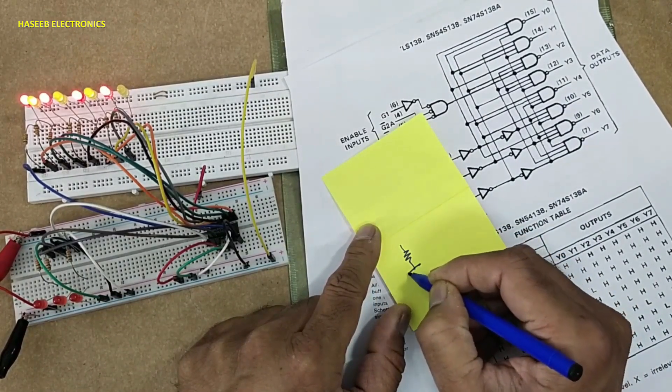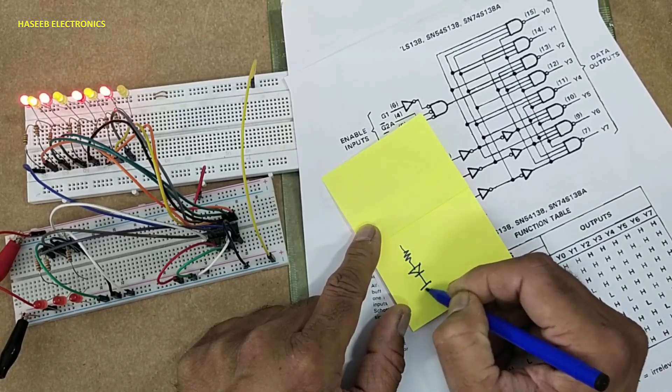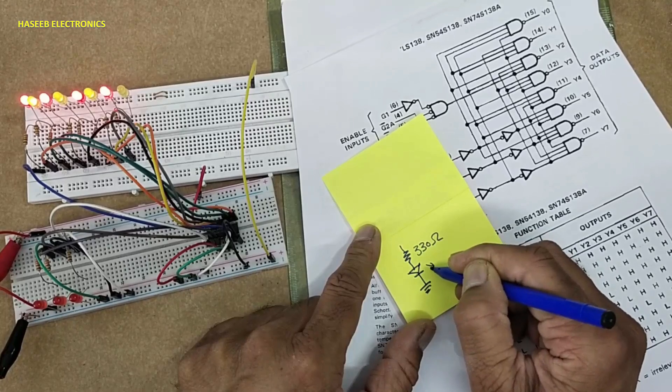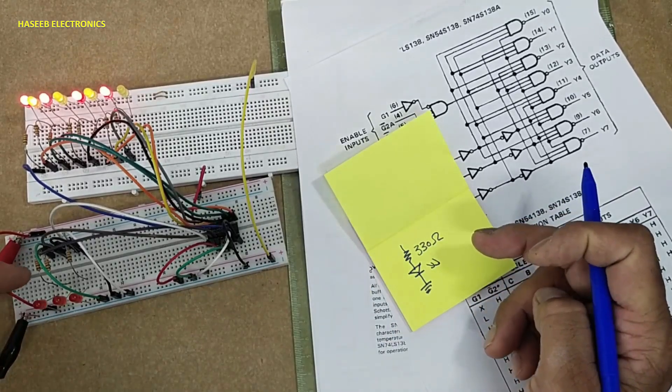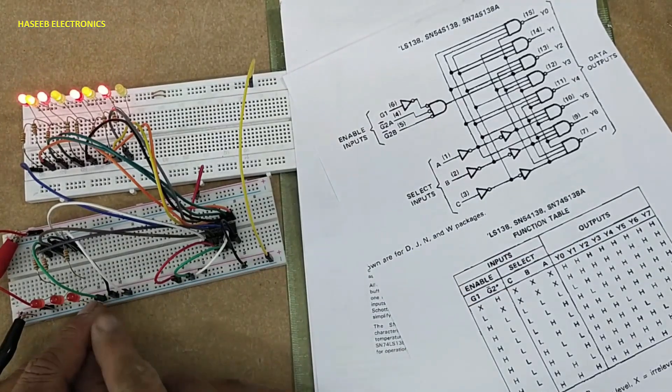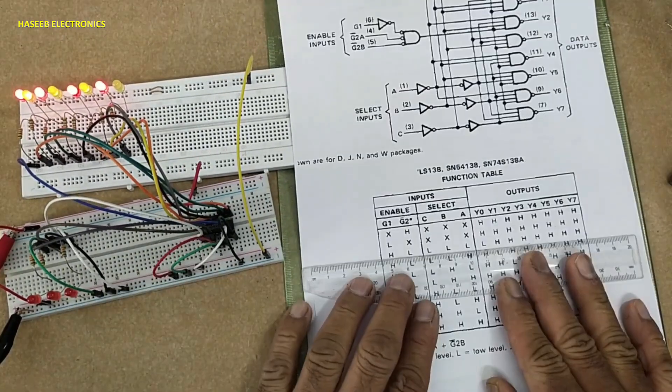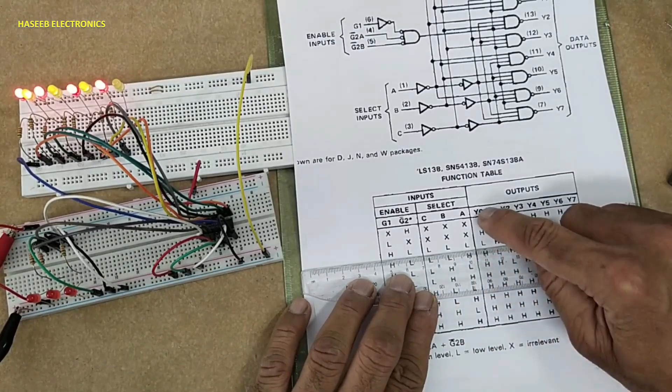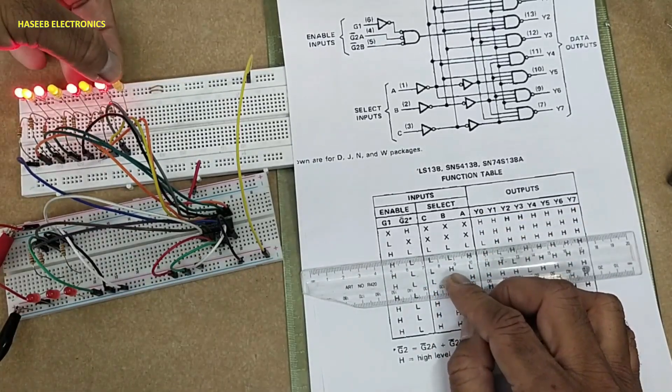LED, one resistor, and LED with 330-ohm resistor. These are pin numbers one, two, three. When all three inputs are low, Y0 is active.